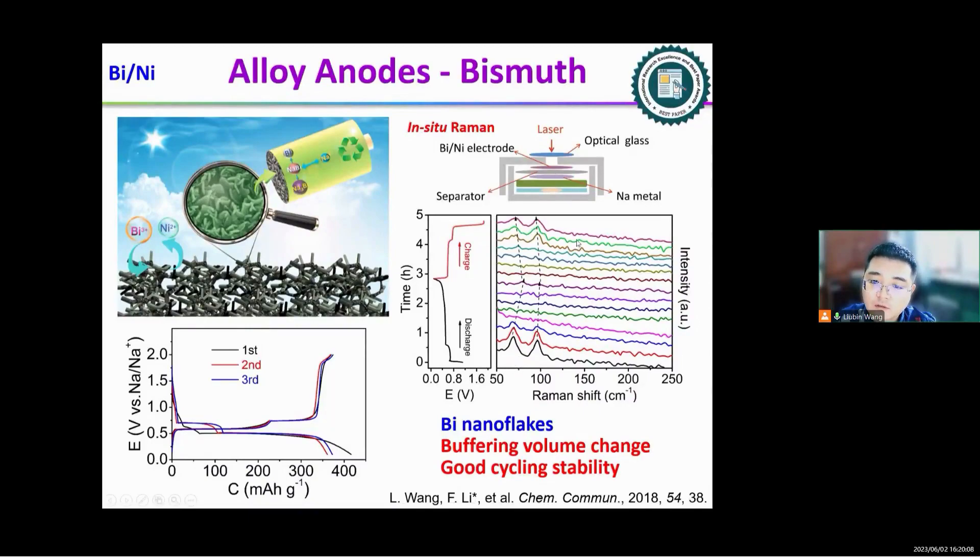Through this picture we can find the signals of bismuth is missing during the discharge process, while in the charging process the signals of bismuth return back. So the prepared bismuth nanoflakes can efficiently buffer the volume change and ensures a good cycling stability.